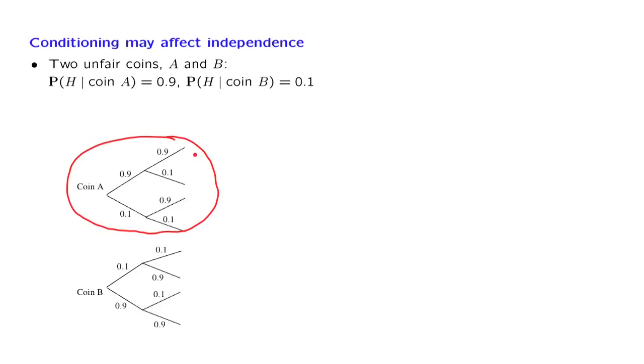So this is a conditional model, given that we have in our hands coin A. In this conditional model, the probability of heads is 0.9. And moreover, the probability of heads is 0.9 in the second toss, no matter what happened in the first toss, and so on as we continue. So given a particular coin, we assume that we have independent tosses. This is another way of saying that we are assuming conditional independence.